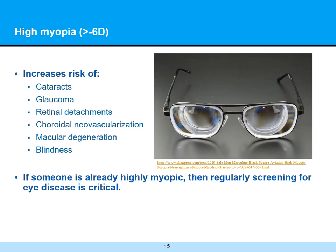Having a high degree of nearsightedness is not just inconvenient in having to wear glasses or contacts for visual correction — it also increases the risk of eye diseases. Some things such as cataracts can be fixed, but high myopia also increases risks of glaucoma, retinal detachments, choroidal neovascularization, macular degeneration, and even possibly blindness. If somebody is already over six diopters of myopia, or highly nearsighted, then regularly screening for eye disease becomes even more critical, with annual evaluation by your eye care professional.